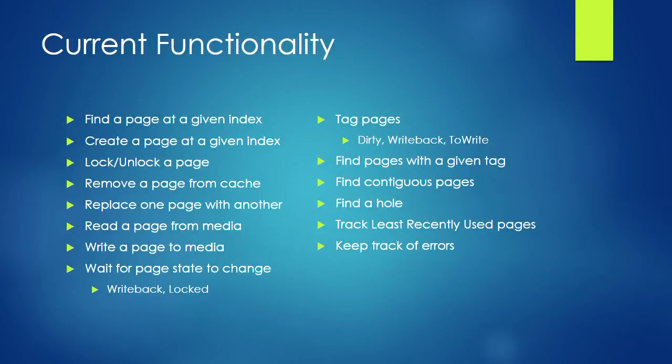The page cache also keeps track of errors, because we're not always great about handling errors in exactly the right place. There's a mechanism where you can report an error to the page cache, and then everywhere else can check whether there's been an error on this mapping. By the way, there isn't just one page cache — there's a completely independent page cache for each file. We index into the page cache by file and then offset within the file; we have one per object in a file system, not one per disk.